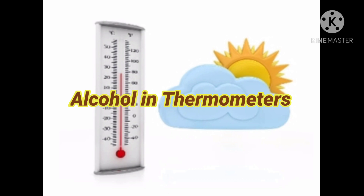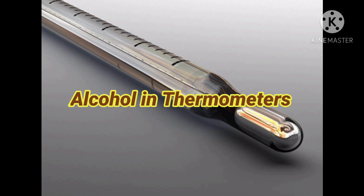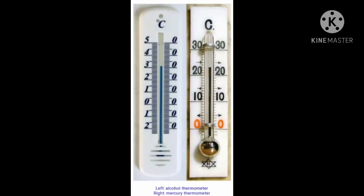The alcohol thermometer or spirit thermometer is an alternative to the mercury in glass thermometer and has similar functions. Unlike the mercury in glass thermometer, the contents of an alcohol thermometer are less toxic and will evaporate quickly. The ethanol version is the most widely used due to the low cost and relatively low hazard posed by the liquid in case of breakage.